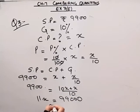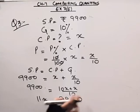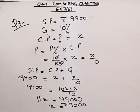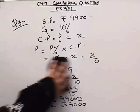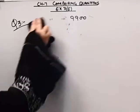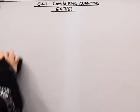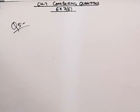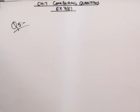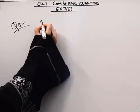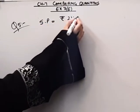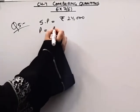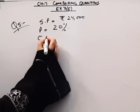That completes question number 3. Now we will come to question number 5. Question number 5 is: by selling a TV set for rupees 24,000, a shopkeeper makes a profit of 20 percent. You have to find out the cost price.